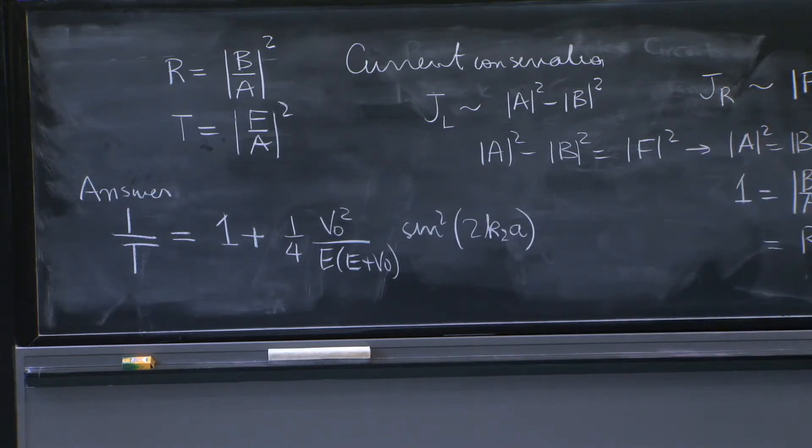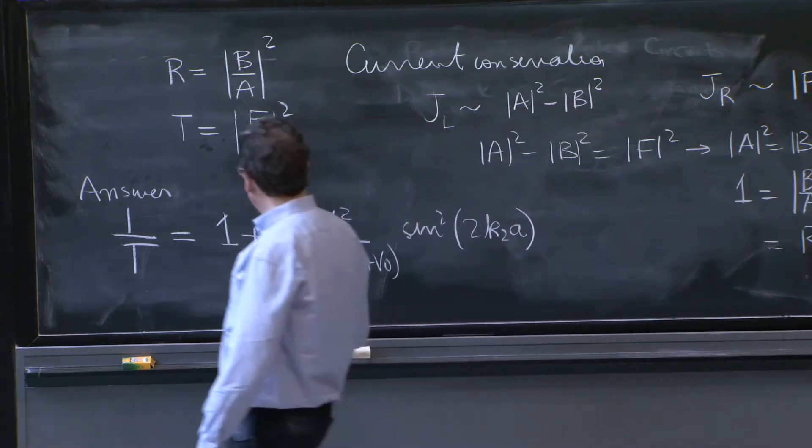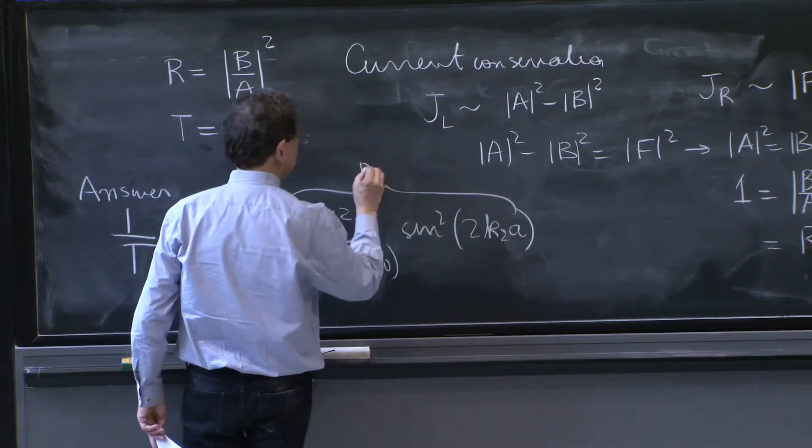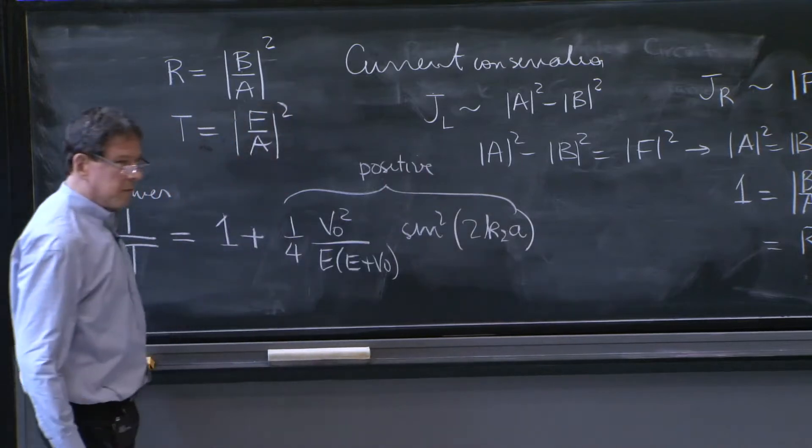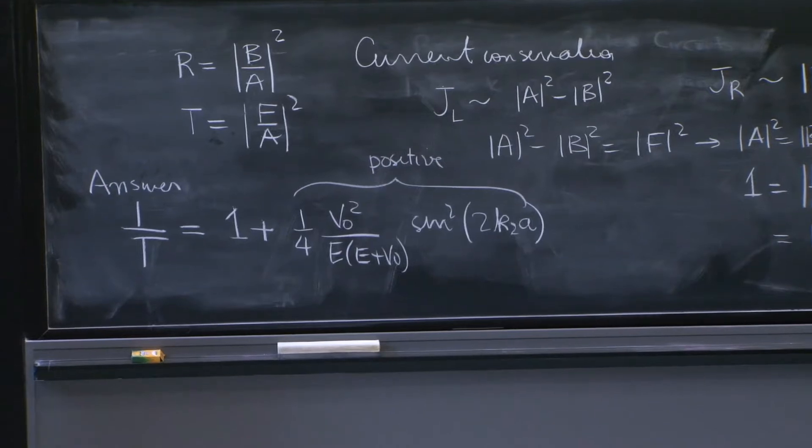So the one thing to notice in this formula, it's a little complicated, is that the second term is positive because v0 squared is positive, the energy is positive, and sine squared is positive.